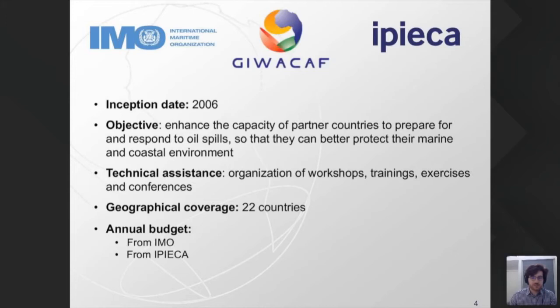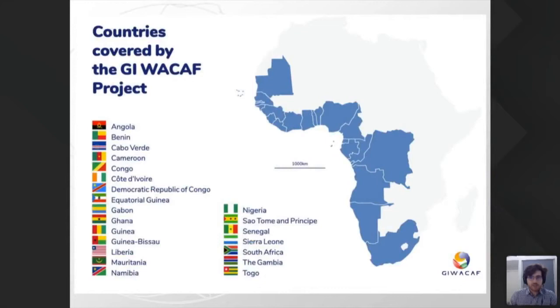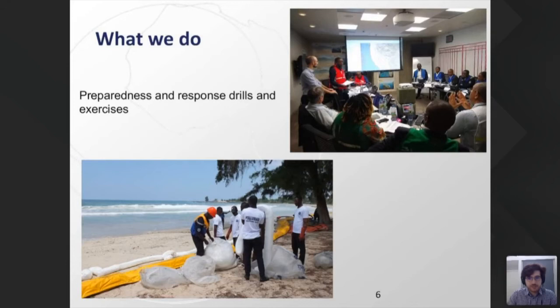We assist countries by organizing workshops, training, exercises, and conferences across 22 countries, funded by IMO and IPIECA. GI-WACAF covers 22 countries from Mauritania down to South Africa — all on the Atlantic coast of Africa. We maintain a focal point within the national authorities of each of these countries and work in close liaison with all of them.